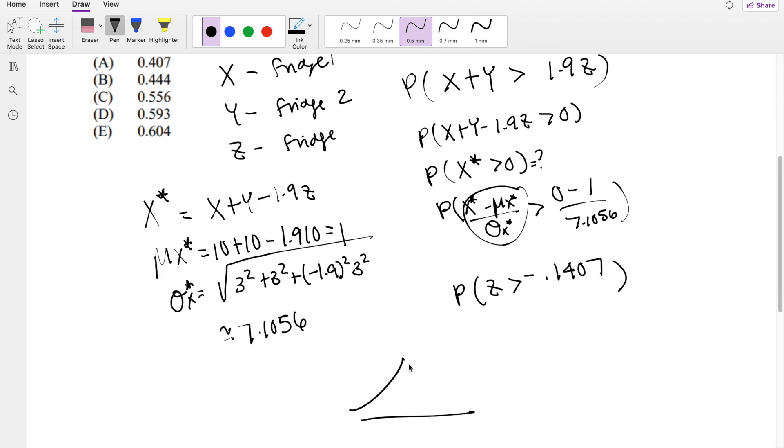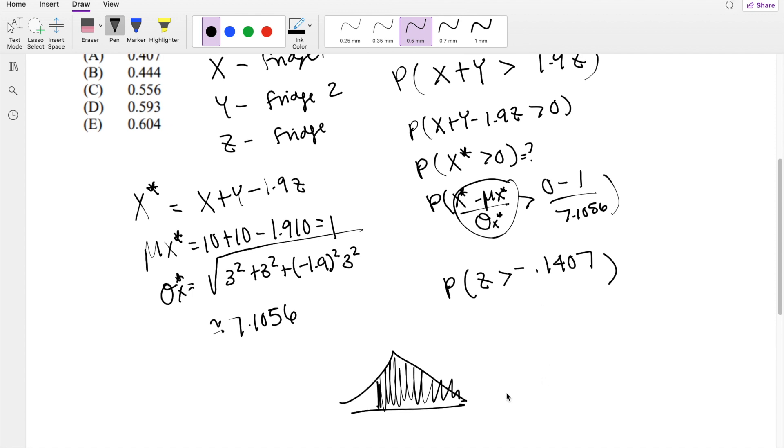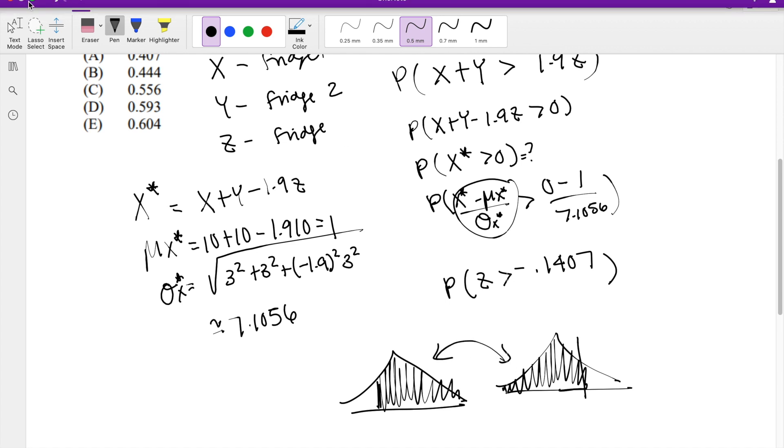So this is asking, so if this is like negative 0.1407, not on the Z scale, what is the probability that Z is greater? So we're looking for this value right here. On the exam, you're going to get the positive Z value. So we're going to look at the Z value where Z is here. And they're going to give you a CDF. So they're going to give you exactly this, which is what we were looking for. So they're equivalent. So let's pull up our Z table.